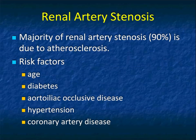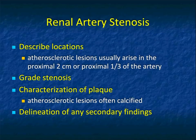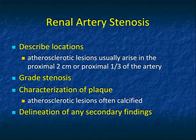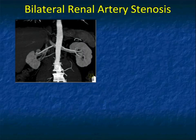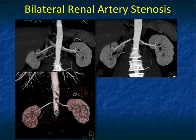The majority of cases of renal artery stenosis are due to atherosclerotic disease, seen more commonly in older patients, those with auto-occlusive disease, hypertension, diabetes, and coronary artery disease. When we look at renal artery stenosis, we note its location — usually in the proximal two centimeters or proximal one-third of the renal artery. We grade the stenosis, characterize plaque as calcified or non-calcified, and assess secondary findings including renal perfusion. A nice example shows two right and a single left renal artery on MIP imaging with high-grade stenosis in the upper right renal artery and in the left renal artery.